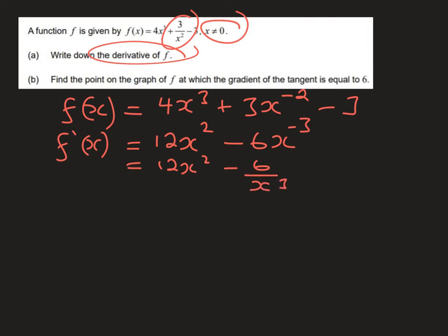The second elephant trap then, this is a classic, was find the point on the graph of f at which the gradient of the tangent is equal to 6. They're not asking you to find the gradient when x equals 6. They're telling you that the gradient of a tangent is 6 and asking you to find the x coordinates.